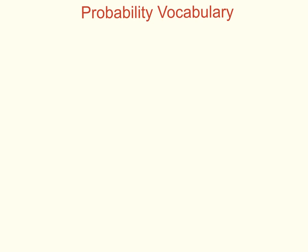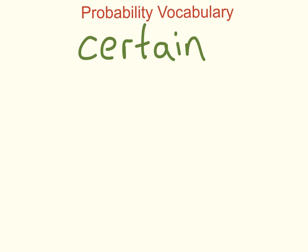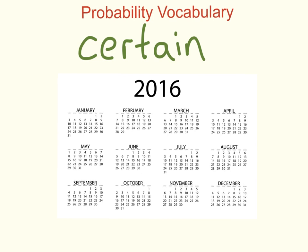The opposite of impossible is certain. Certain is a word that means it will happen — definitely, always. So what's something that is certain? When we look at a calendar, we see that July always comes after June. Does it happen every year? Yes, it does. July always comes after June, so we can say that is a certain event.